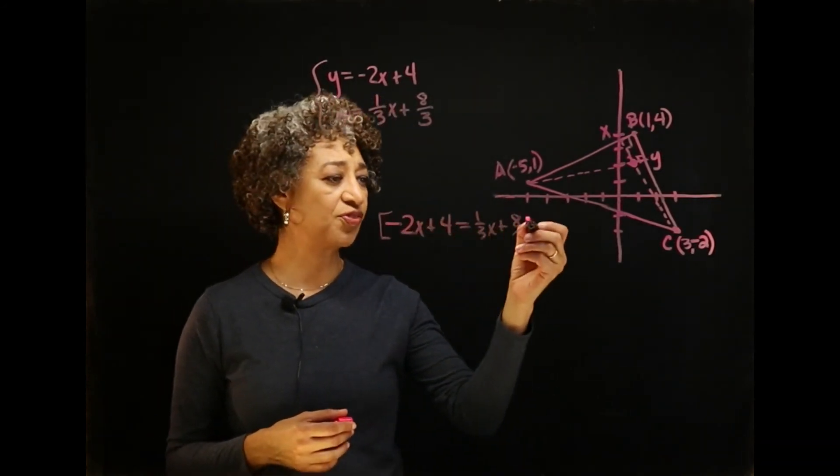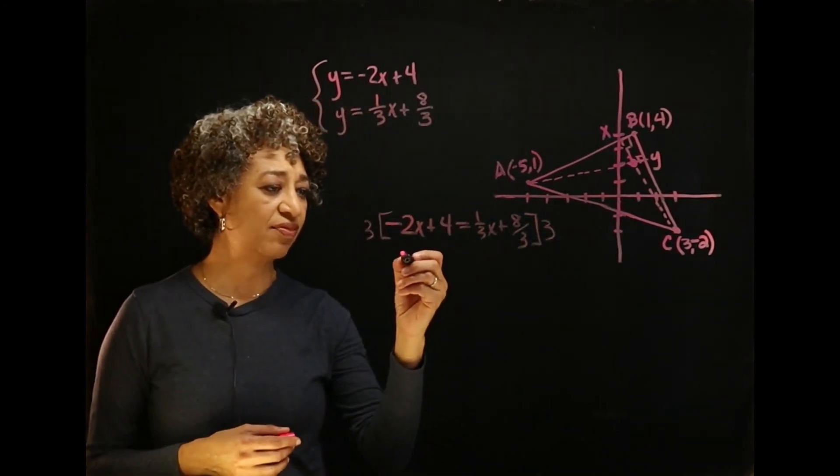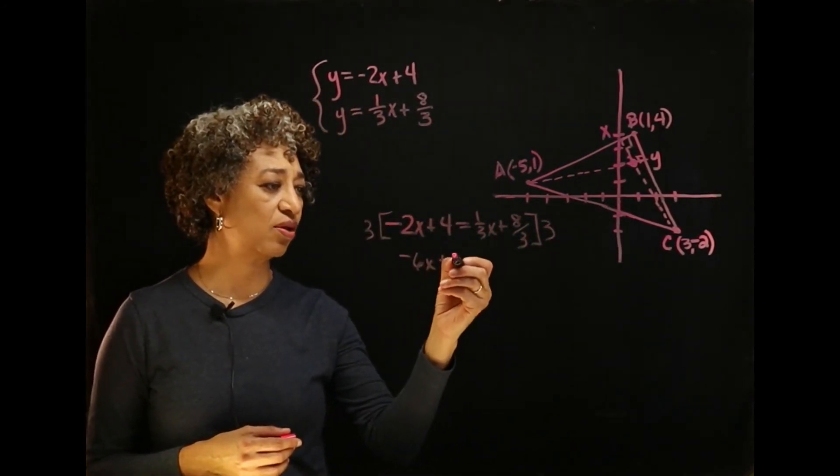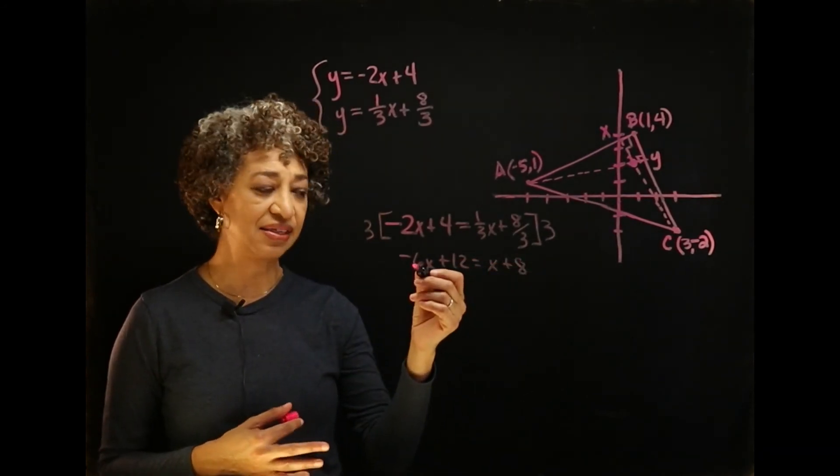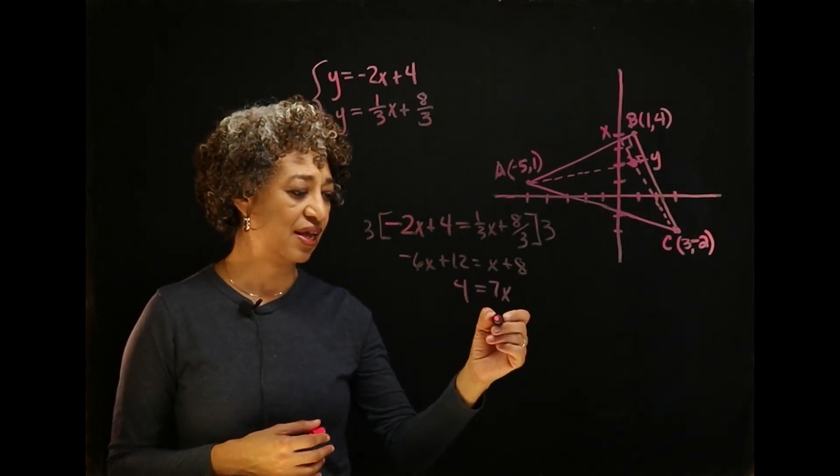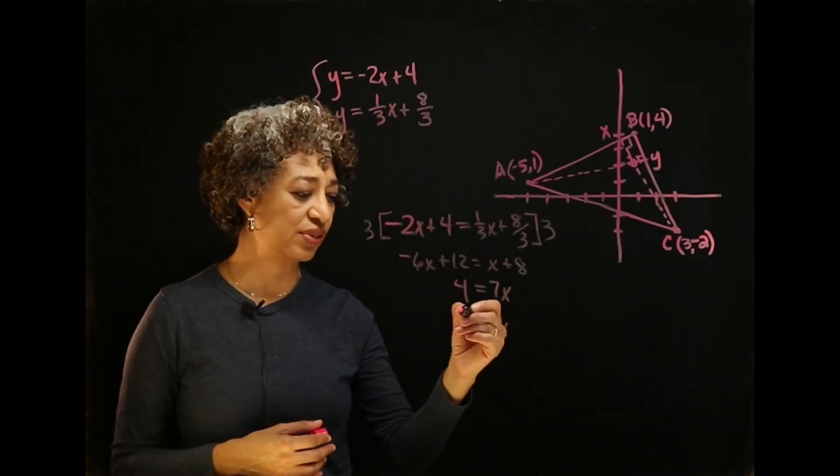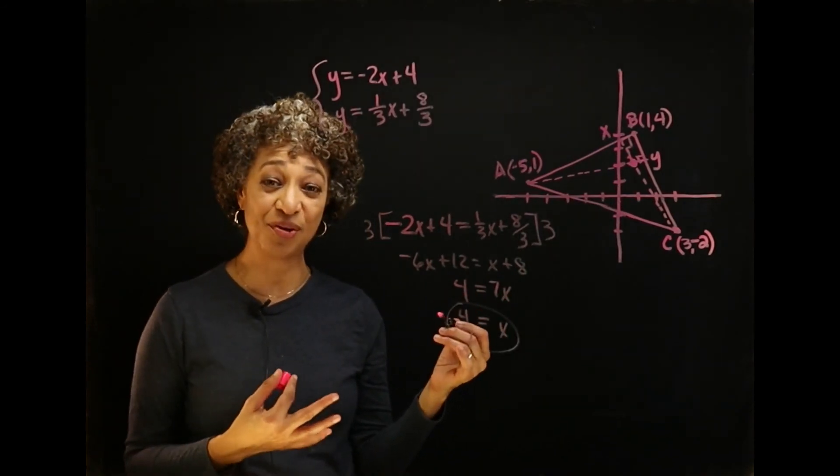And I think I'll clear those fractions by multiplying both sides by 3. And we have negative 6x plus 12 is equal to x plus 8. Add 6x to both sides and subtract 8 from both sides. And I have x is equal to 4 sevenths. So that is the x coordinate of my orthocenter.